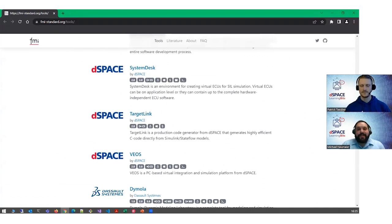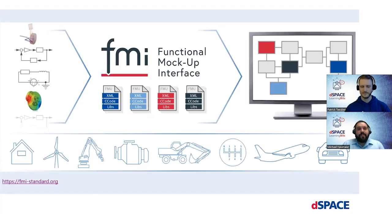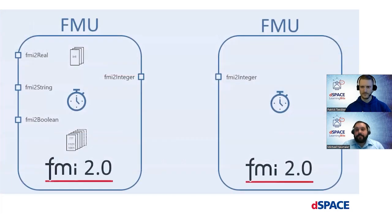A new major version of FMI, FMI 3.0, has just been released. What are the key improvements from the DSpace point of view, and what could they be used for? Although FMI 2.0 is already a great way to share models and is used by many companies, it has some restrictions. One restriction, for example, is that there is no array support.